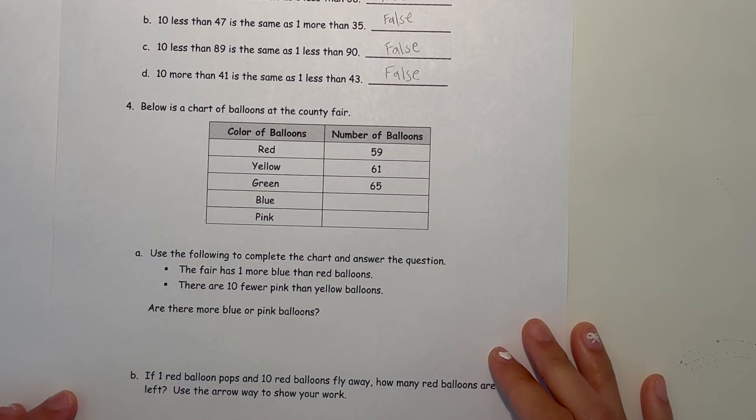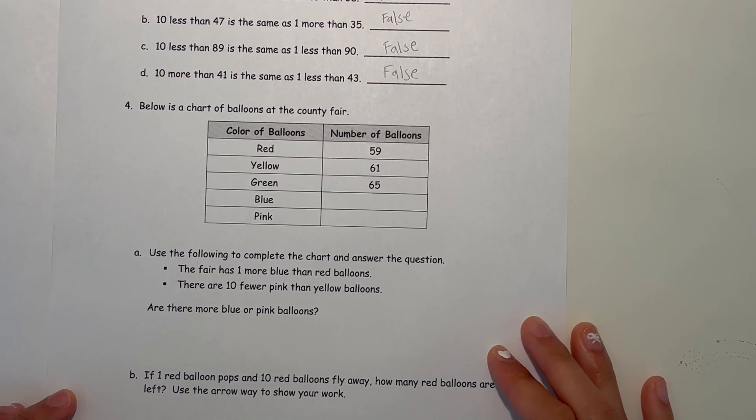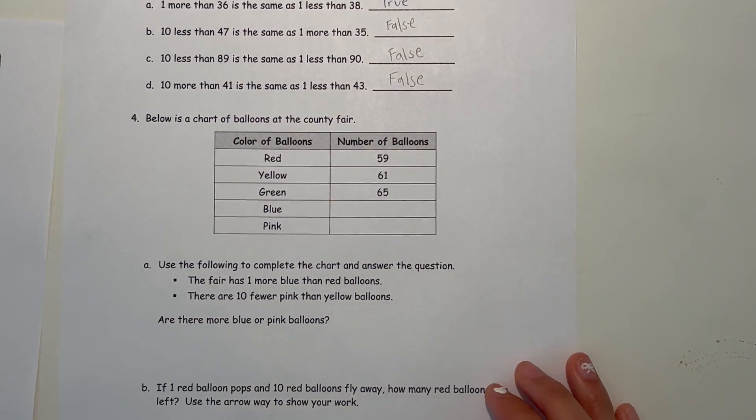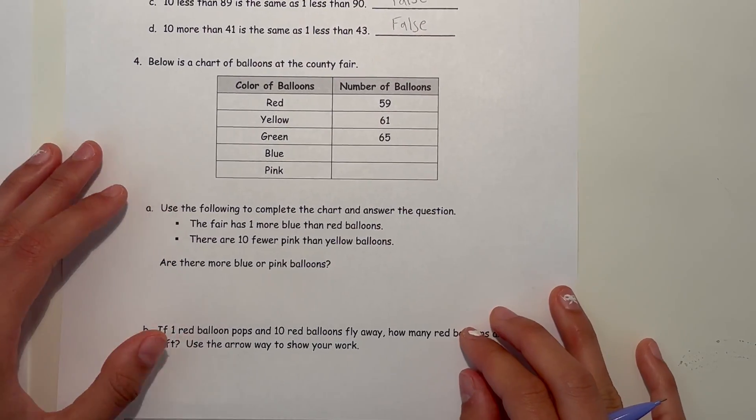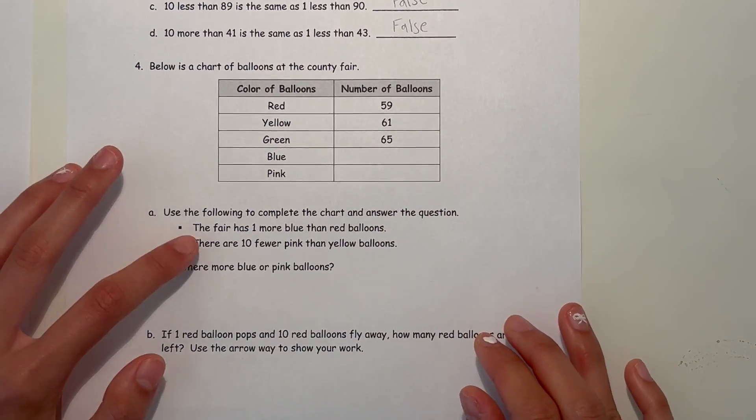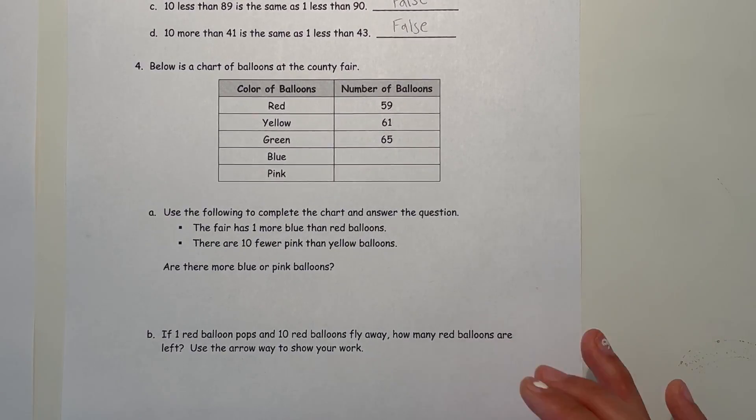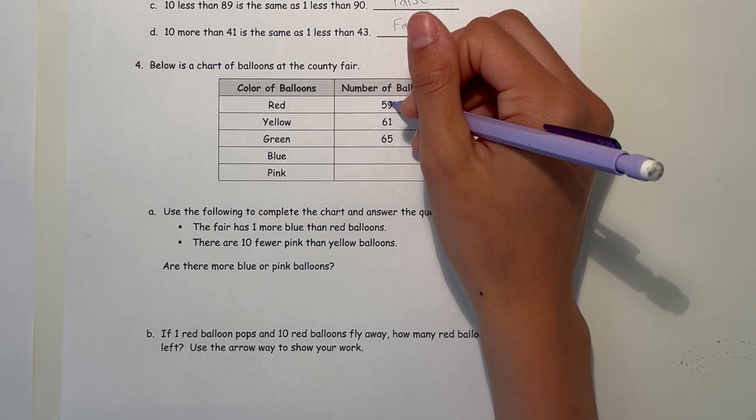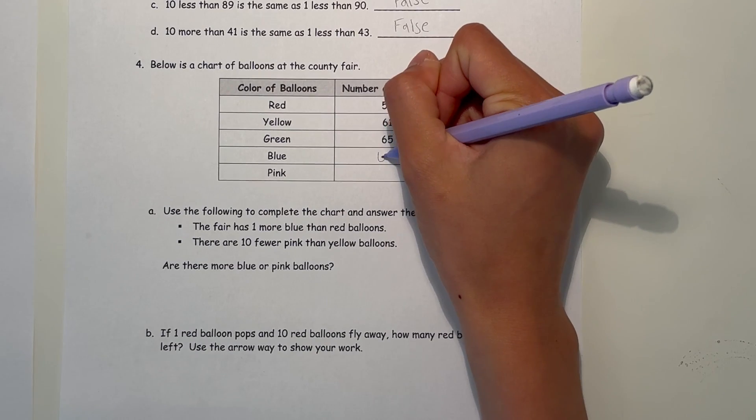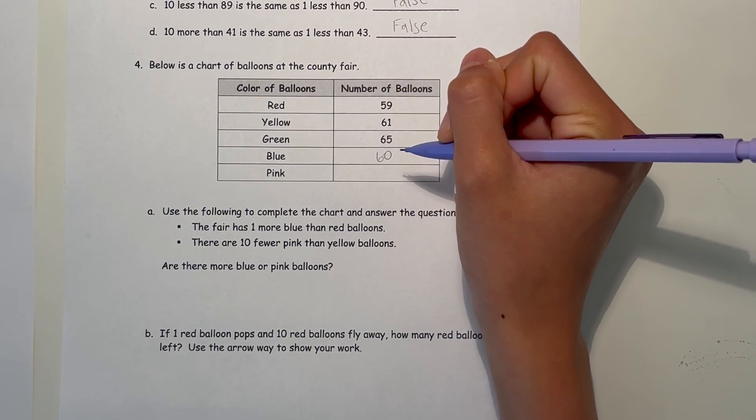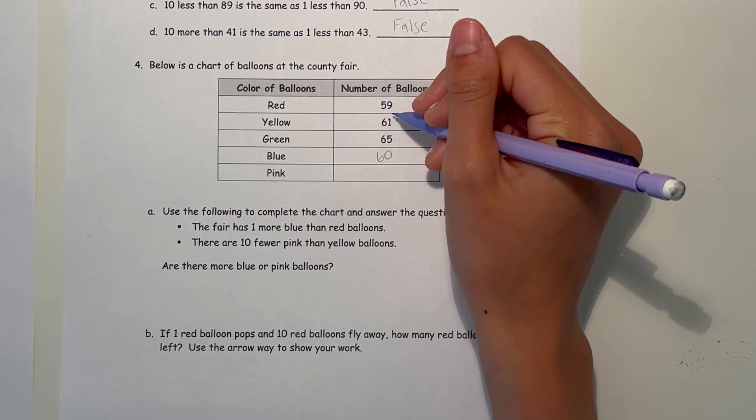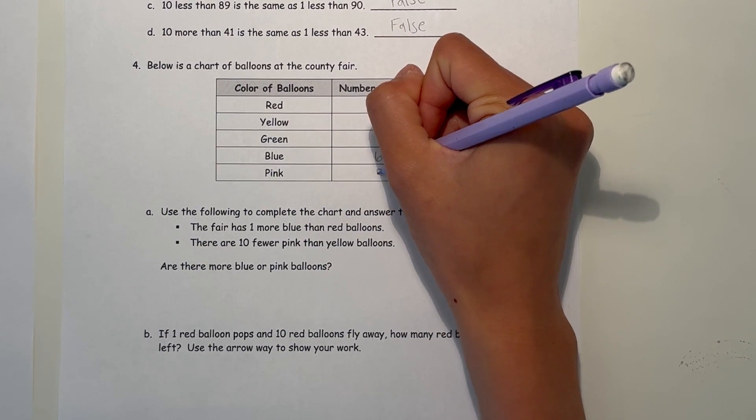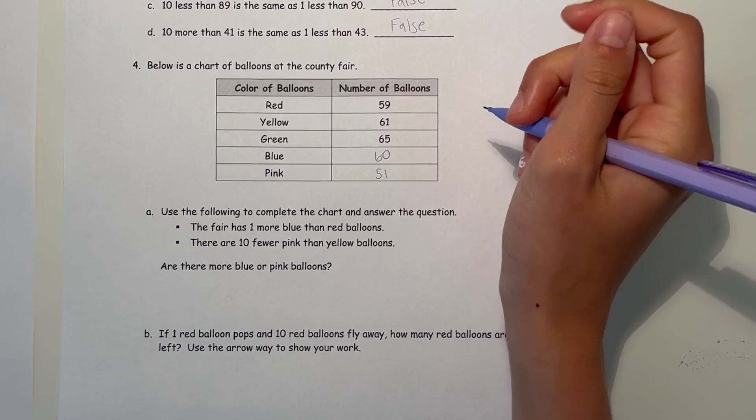Number 4, below is a chart of balloons at the county fair. So, A says use the following to complete the chart and answer the questions. So it says the fair has 1 more blue than red balloons. So we know there's 59 reds, so if there's 1 more blue, that means there's 60 blues. And now for pink, there are 10 fewer pink than yellow balloons. There's 61 yellows, which means there must be 51 pinks.